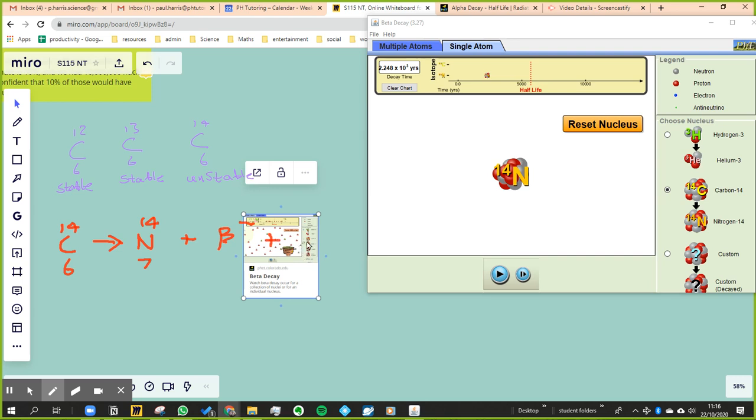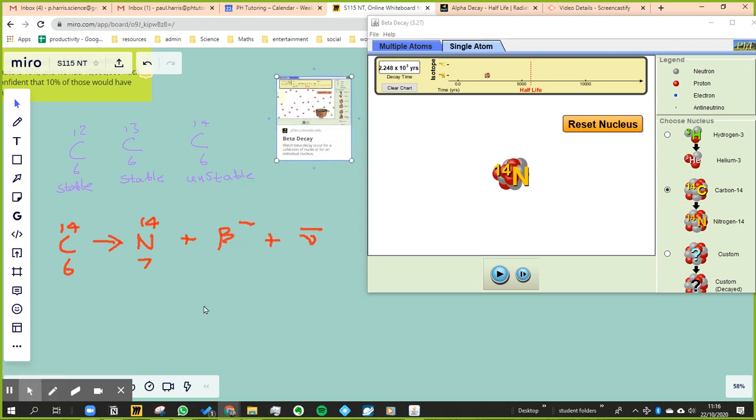The first thing that was given off, they didn't really know what it was. They called it a beta particle. Another thing that was given off, which comes up at A-level, was an anti-neutrino. You don't need to know that bit at GCSE. You do need to know this bit at GCSE.